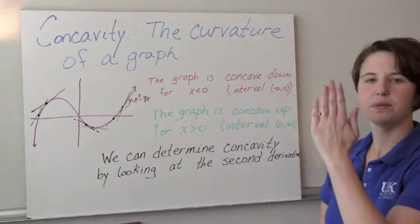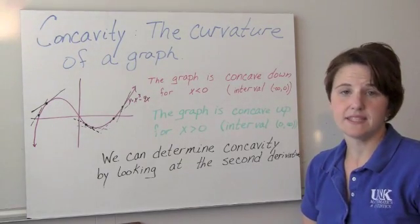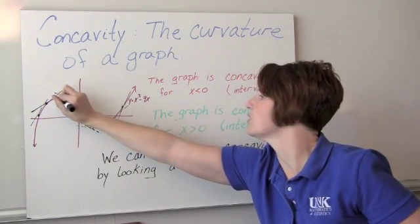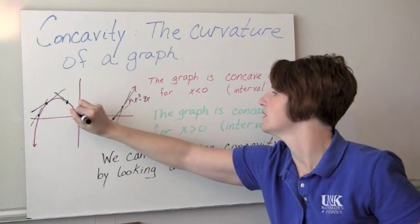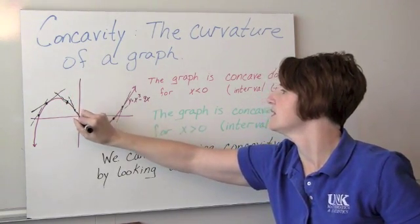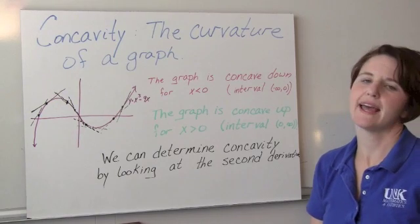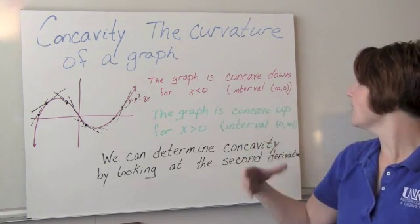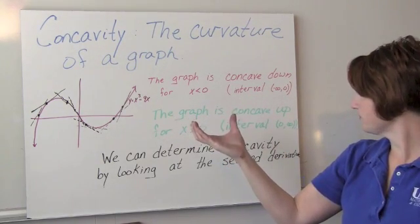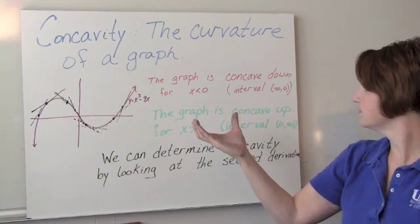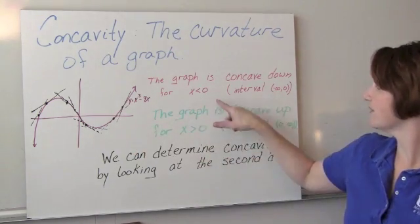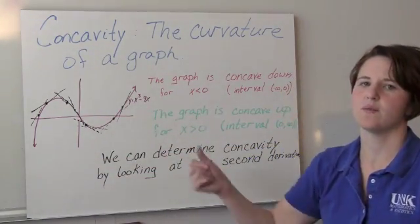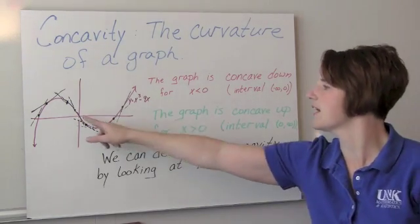These were positive slope places and notice that the steepness is decreasing. Here are some negative slopes — they're becoming more negative, but those tangent lines are above the graph. We're concave down on this graph for x less than zero and concave up for x greater than zero.